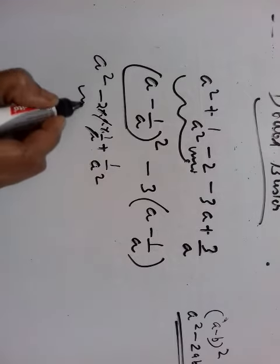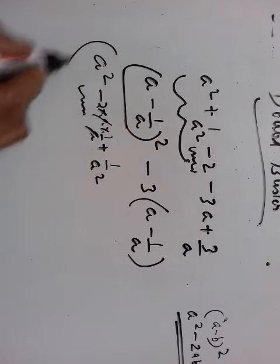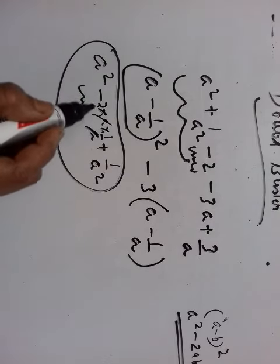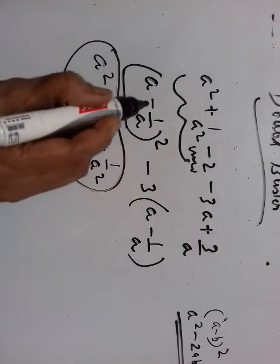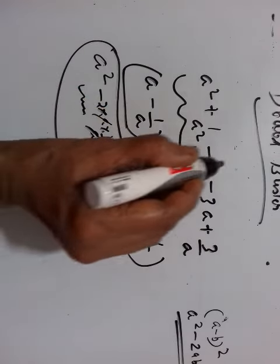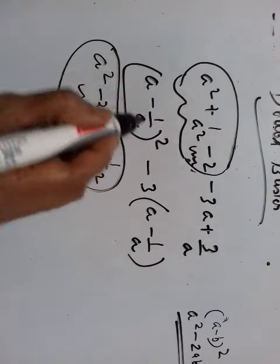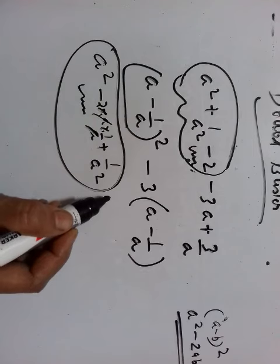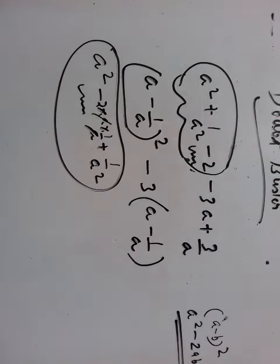a times a goes off, minus 2 remains. So this whole thing is equal to what? a squared minus 2 plus 1 upon a squared is equal to a minus 1 upon a squared. So this is a minus 1 upon a squared. So this one is equal to 1.